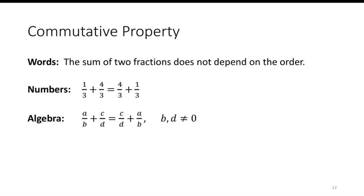For instance, the commutative property states that if you're adding two numbers together, it doesn't matter which number is first. So 1/3 + 4/3 is the same thing as 4/3 + 1/3. A/B + C/D is the same thing as C/D + A/B.